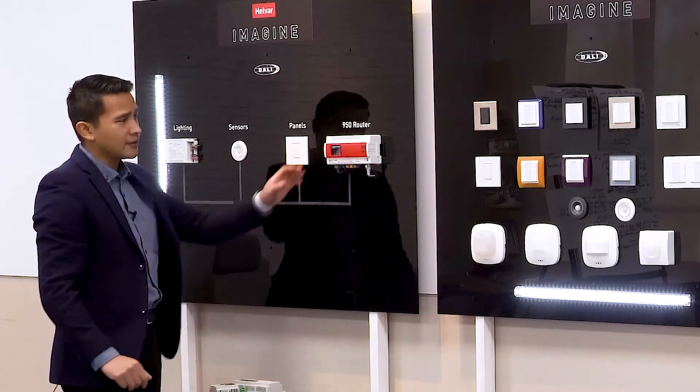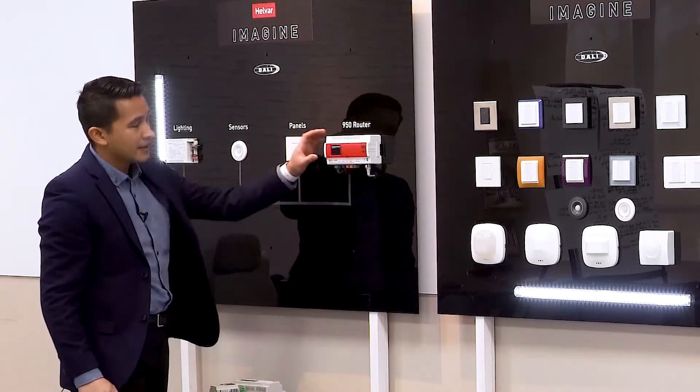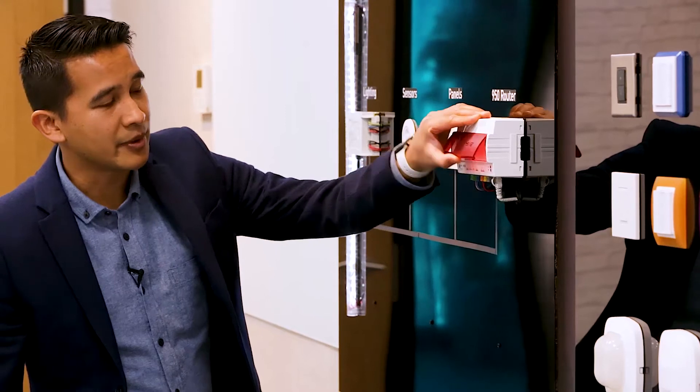Another really nice feature of the 950 is the LCD screen, and there's a few functions you can do with that. To access the controls, you lift up the red protective lid.